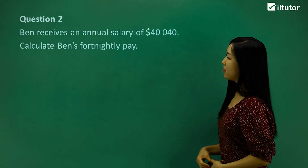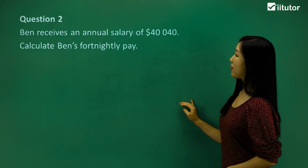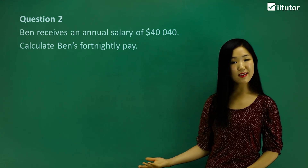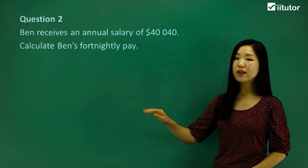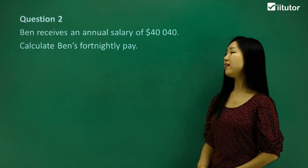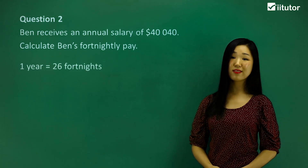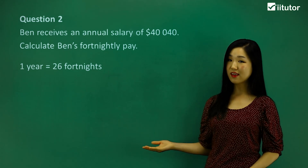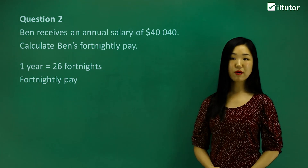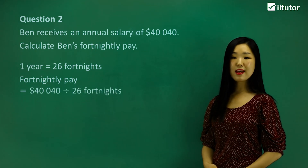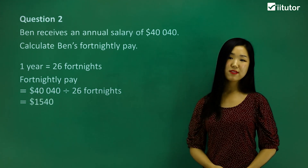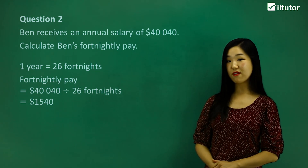Question two: Ben receives an annual salary of $40,040. Calculate Ben's fortnightly pay. The key word is 'fortnightly.' In one year there are 26 fortnights, so to calculate Ben's fortnightly pay we divide his annual salary by 26. Put it into your calculator and you should get $1,540 — Ben's fortnightly salary.